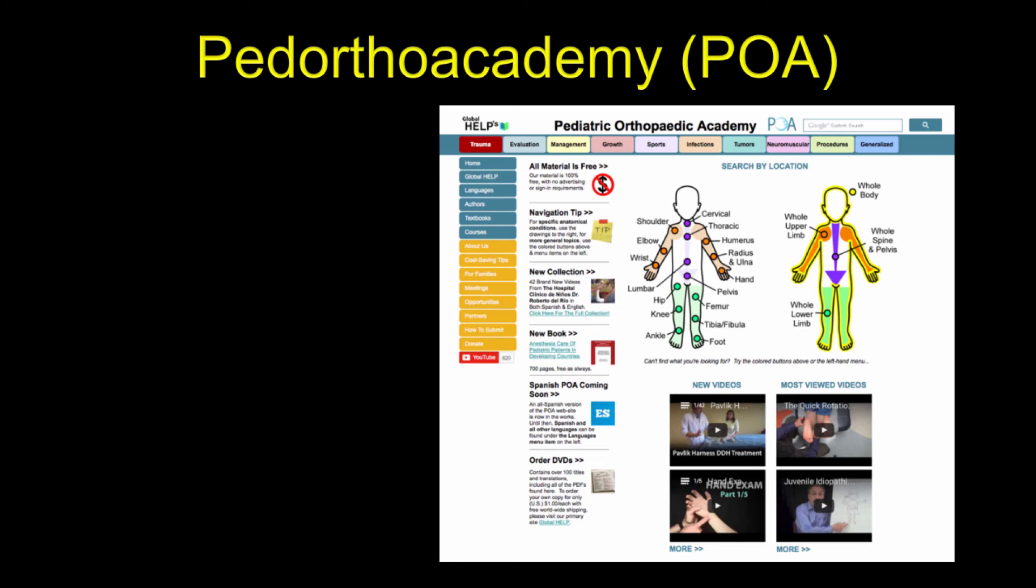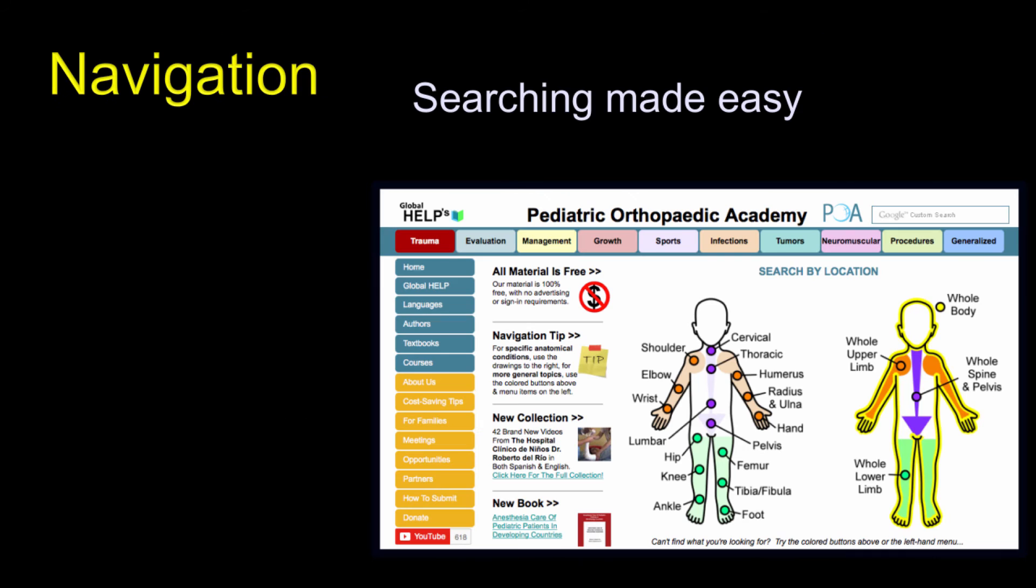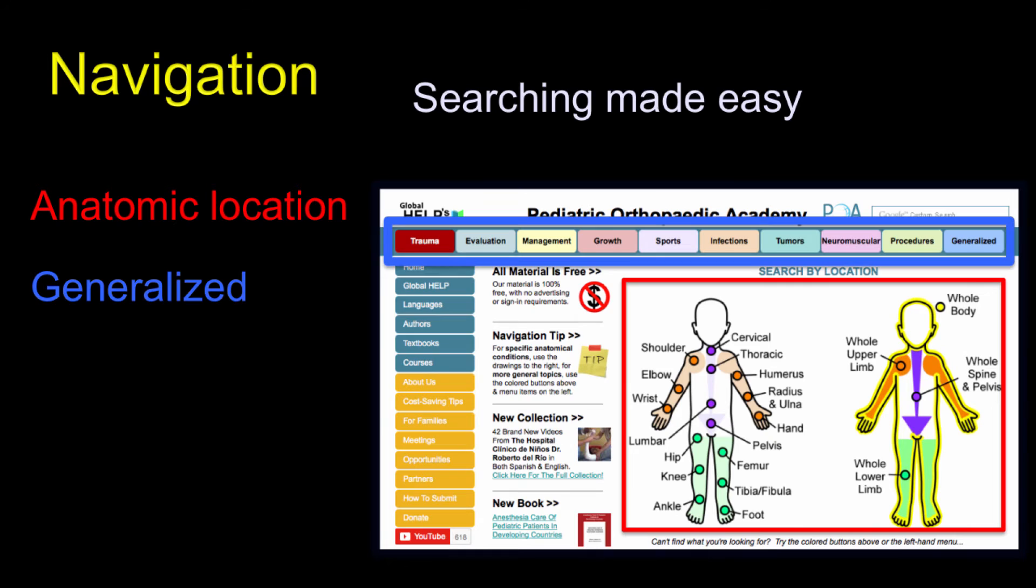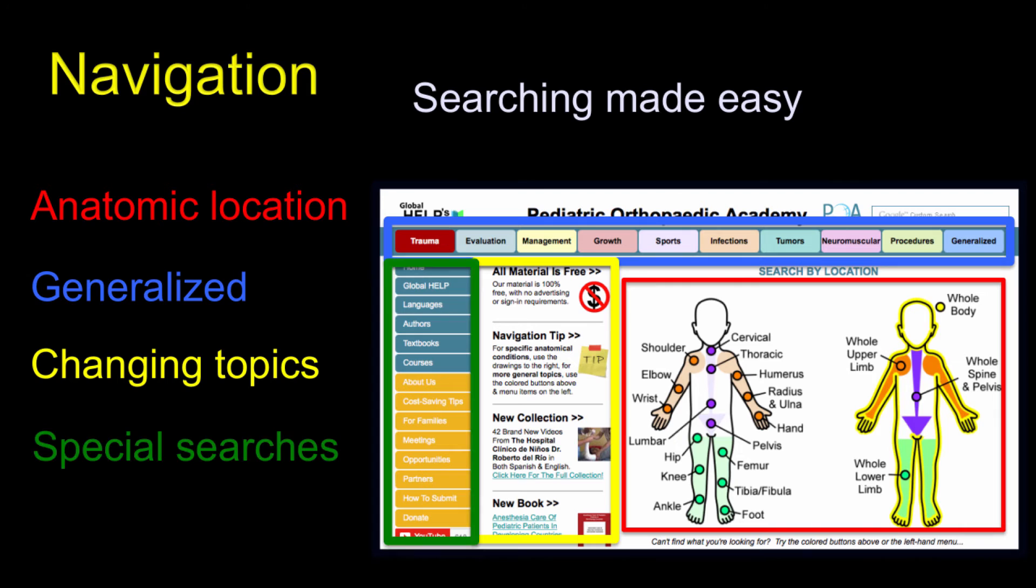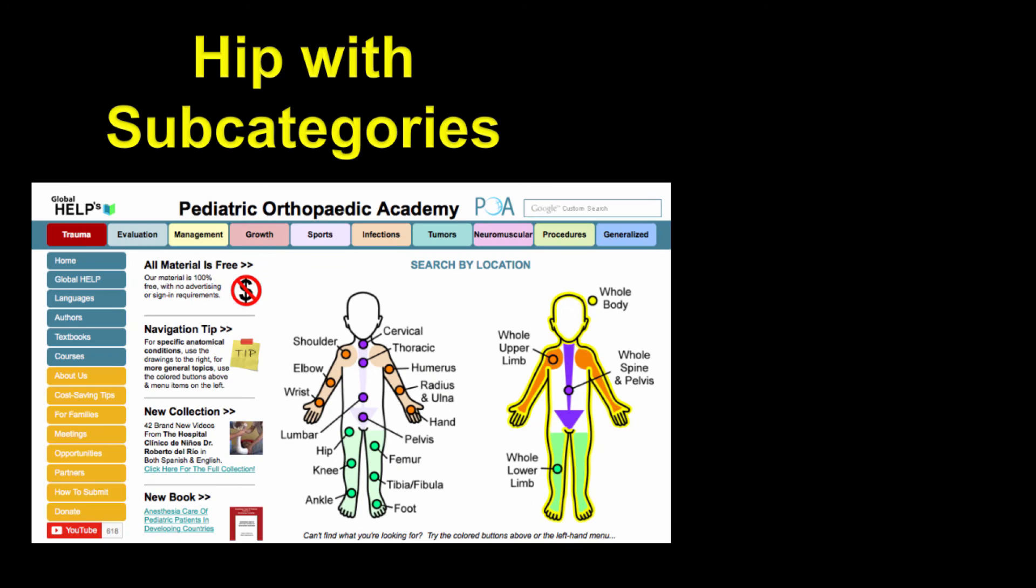We established the Pediatric Orthopedic Academy as a distribution website, a subsidiary of Global Health Organization. It's planned to have a Spanish language edition and perhaps other languages. It's designed to make navigation as easy as possible. You first navigate by focusing on anatomical location, or if not applicable, like cerebral palsy, you go to generalized. Or changing topics that are of current interest, or special searches as shown on the left column.